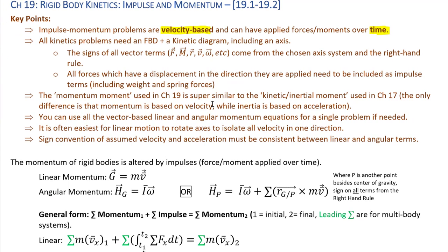In chapter 19 we also have a momentum moment term on the right-hand side of the angular impulse-momentum equation. The momentum moment is velocity-based, whereas the kinetic or inertial moment from chapter 17 was acceleration-based. Kinetic inertial was R cross MA; the momentum moment is R cross MV, where R and V are vectors. Besides that velocity-versus-acceleration difference, they work the same way — both cross products with essentially the same influence on the overall problem.